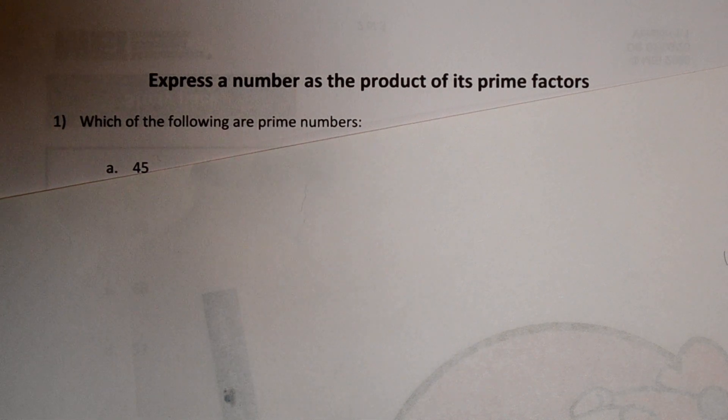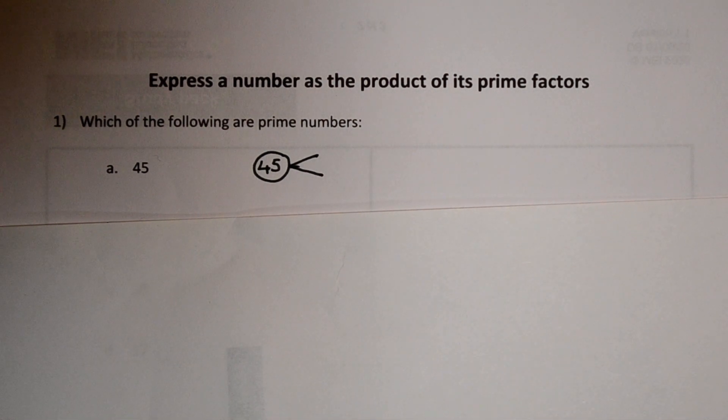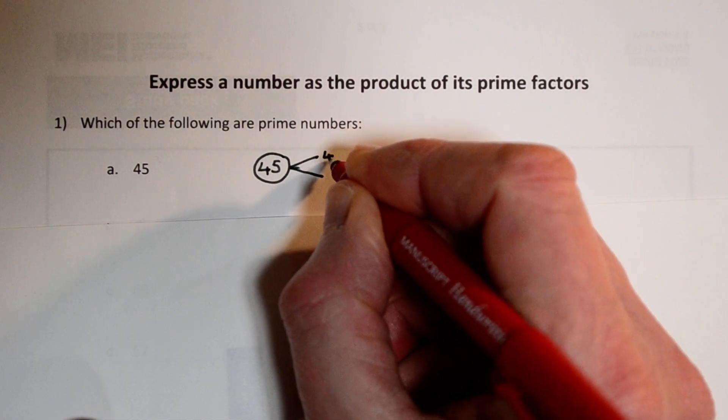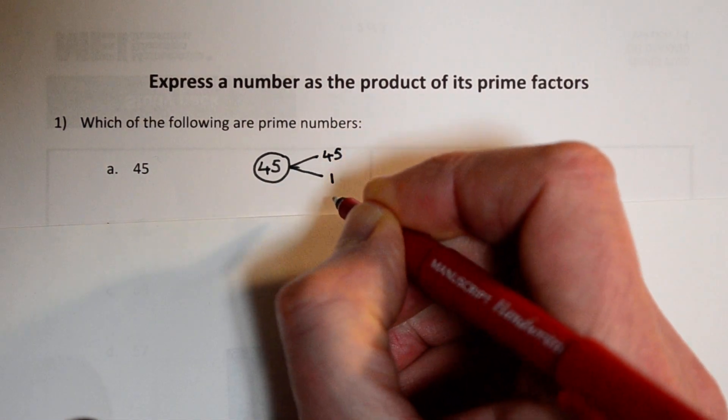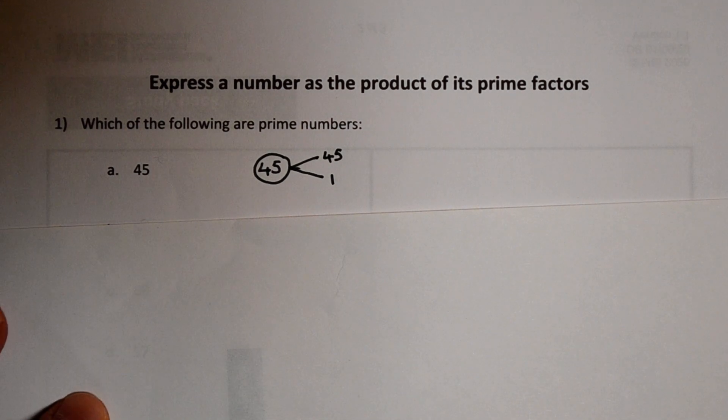Let's start with 45. What pairs of factors can you think of which multiply to make 45? The obvious one we start off with is 45 times 1. So you've got two factors already. Can you think of any more?